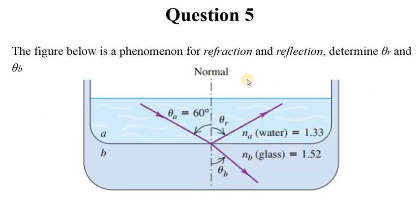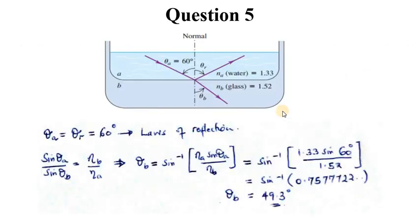Question 5: The figure below shows a phenomenon of refraction and reflection. Determine theta r, the angle after reflection, and theta b, the angle after refraction.